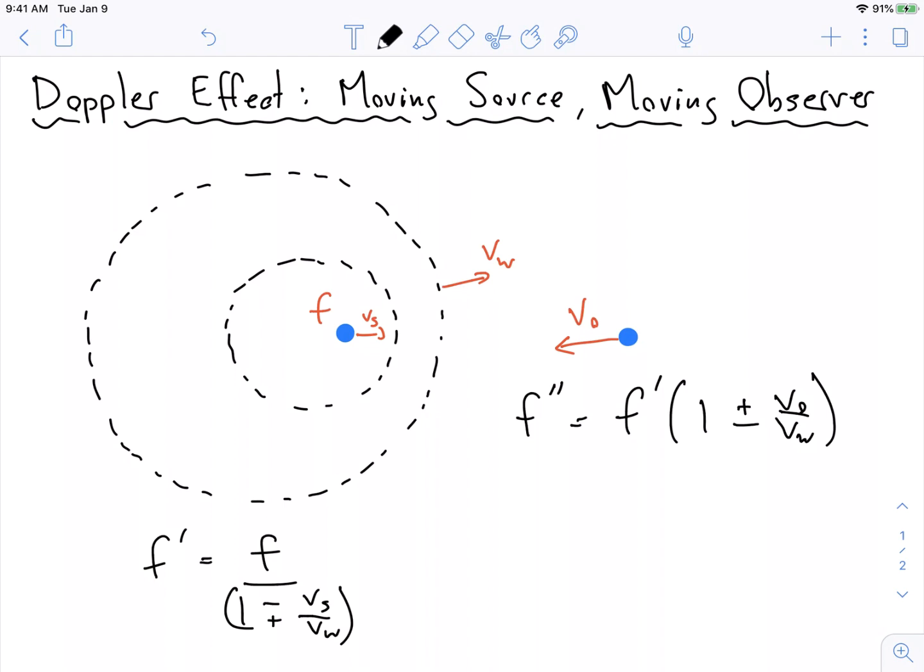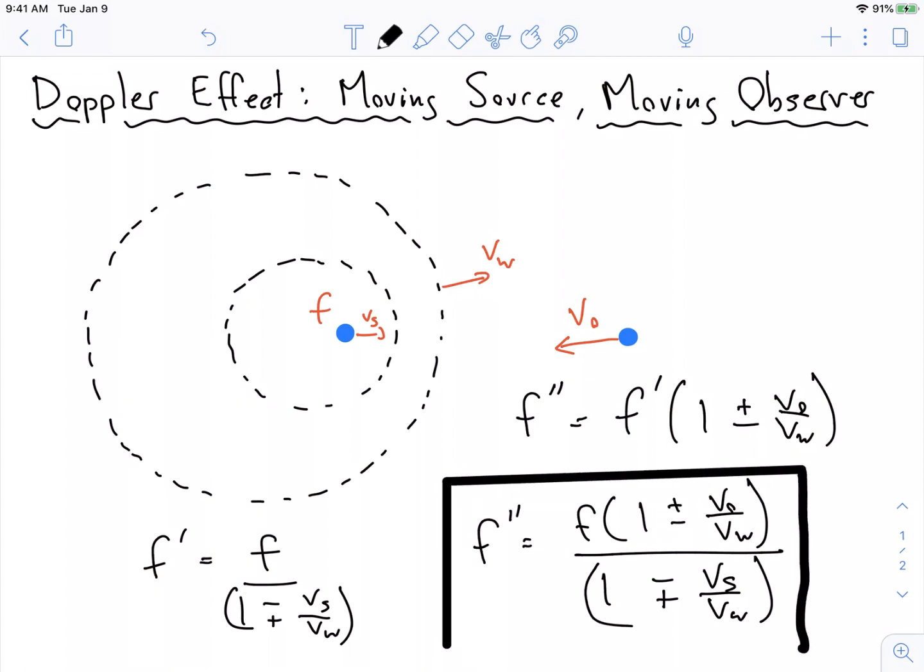And so if we combine both of these, we see that we get this big master equation. I'm going to substitute this frequency in over here to f prime. So I get f divided by 1 minus plus vs over vwave. And so this is a big master equation that accounts for both moving sources and moving observers.